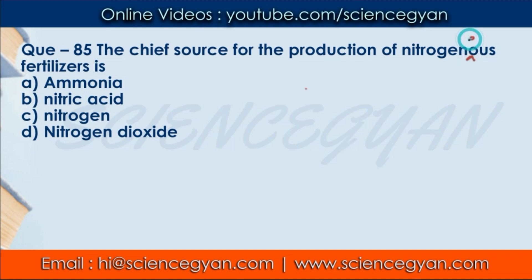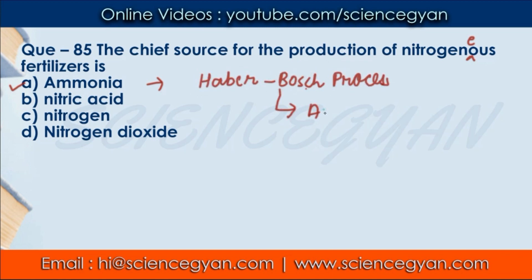Question number 85: The chief source for production of nitrogenous fertilizers — the correct answer is A — ammonia. The main source of nitrogenous fertilizers is ammonia. Also note that the most important industrial process for ammonia production is the Haber-Bosch process. The ammonia produced via the Haber-Bosch process is the main source for manufacturing nitrogenous fertilizers.